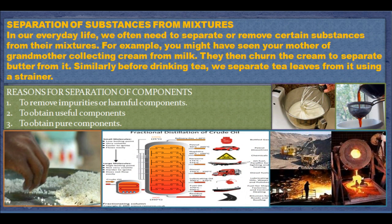Separation of substances from mixtures. In our everyday life, we often need to separate certain substances from their mixture. For example, cream is collected from milk and churned to separate butter. Before drinking tea, we separate tea leaves using a strainer. Reasons for separation include: removing impurities or harmful components — for example, rice or pulses may contain small stones which are removed to make food safe. Similarly, water is purified to make it fit for drinking.